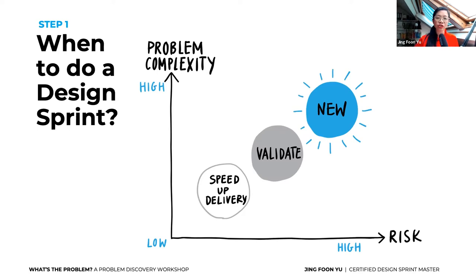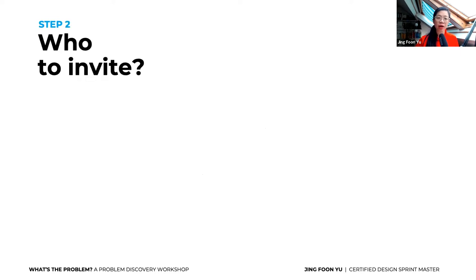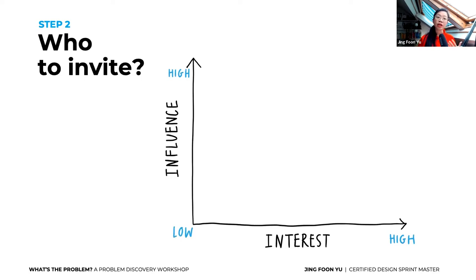Now you know when to do a sprint and when to do a problem discovery session — but who to invite? I usually ask my point of contact in a company to make a stakeholder map together. We look at people's influence versus interest. We want to invite the people who have the power or influence to stop or start a project.